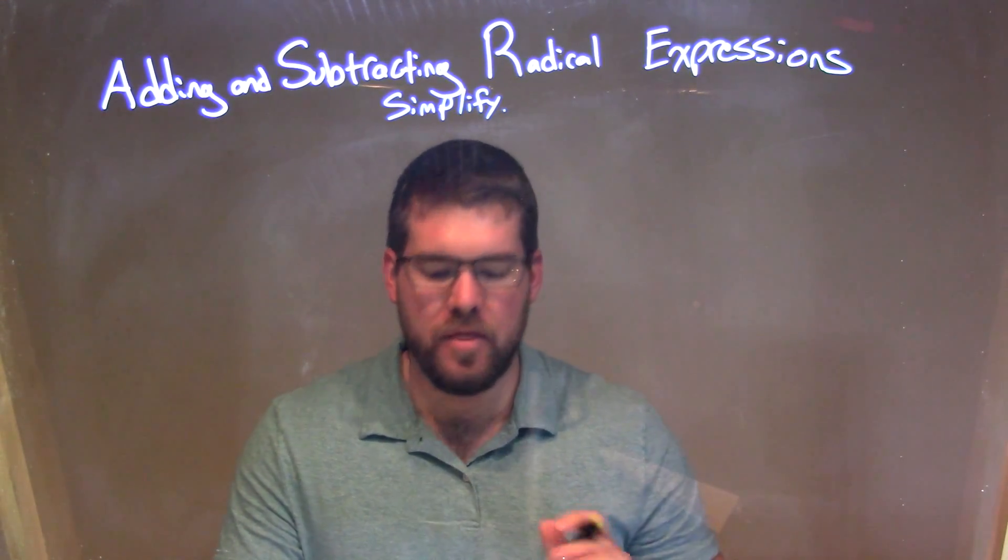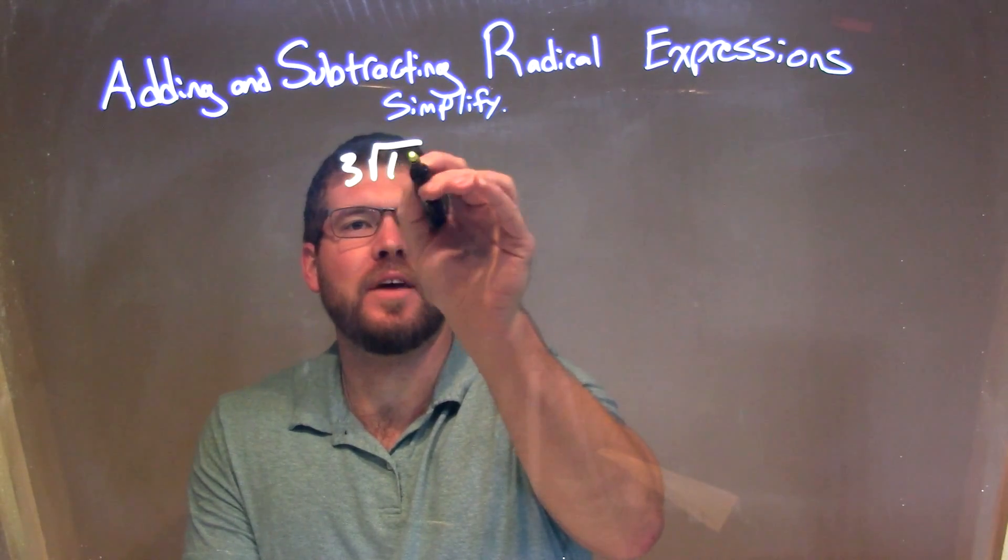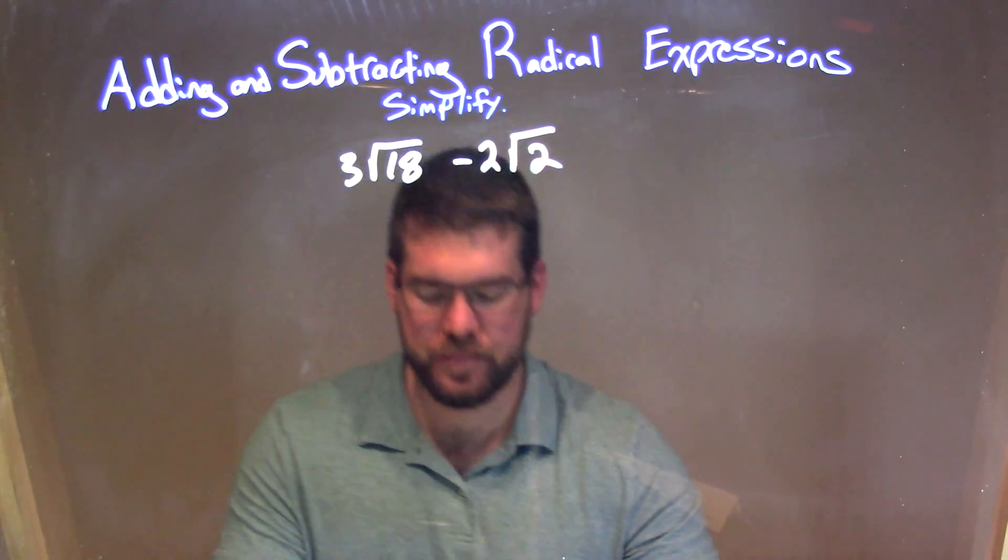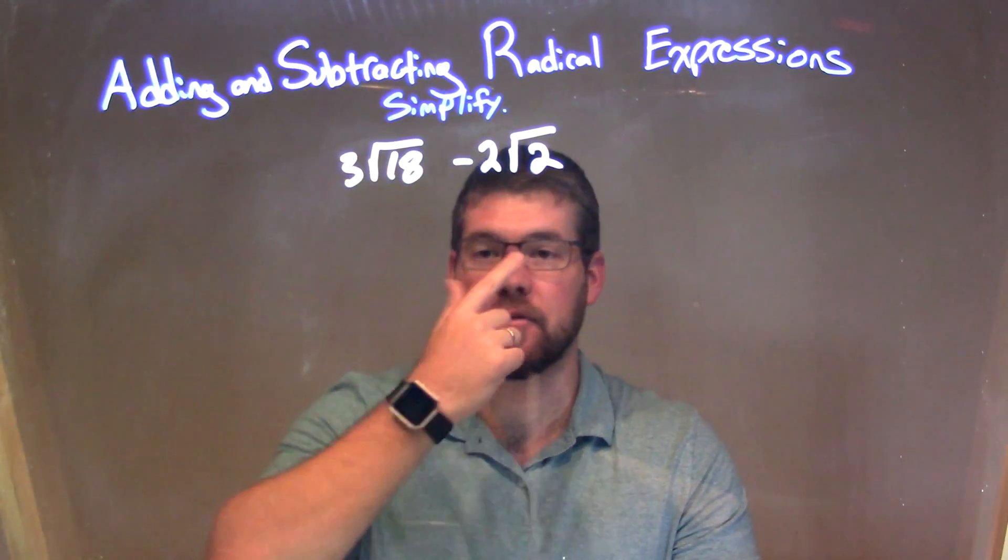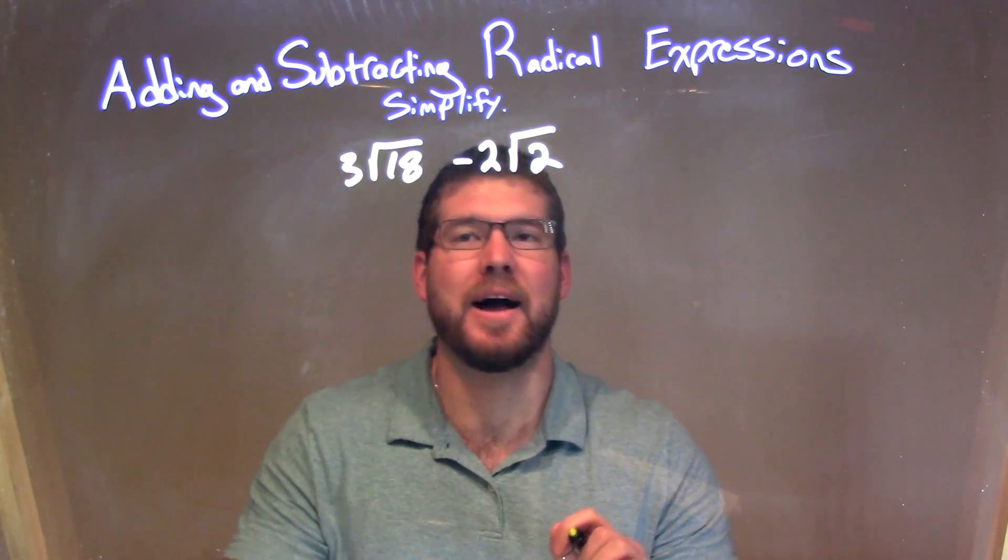So if I was given this expression to simplify, 3 times the square root of 18 minus 2 times the square root of 2. What I want to look at here is, how can I make an 18 look like a 2? Because I can't simplify right now, but if they both have the same square root I could.